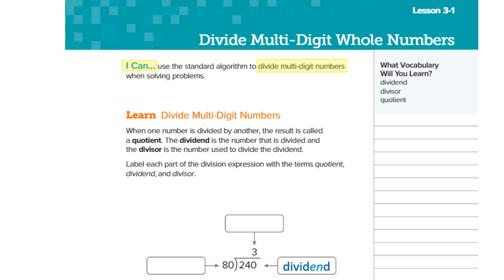Please fill in the information inside of your book, identifying these three different parts of division. The dividend is on the inside, the divisor is on the outside, and your answer is your quotient. Please make sure you have those filled in, and then let's look at doing our math.